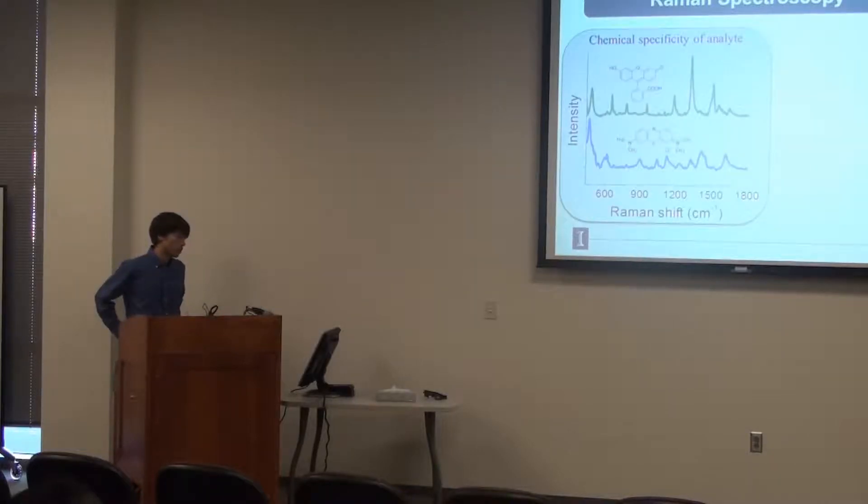So one of the nice things about Raman spectroscopy is that we have chemical specificity, meaning that if we have different chemical structures, we can easily distinguish between them. So for example, what you see here is fluorescein and methylene blue. And they both, as you can see, have very distinct chemical structures as well as Raman spectra.